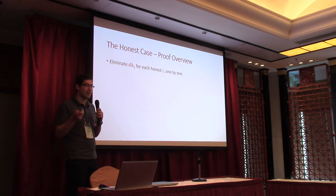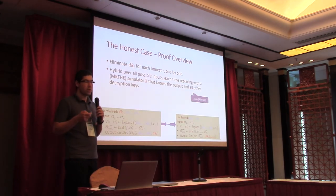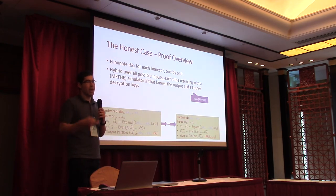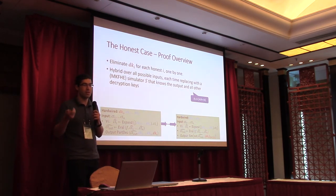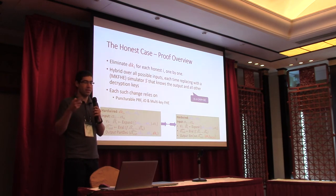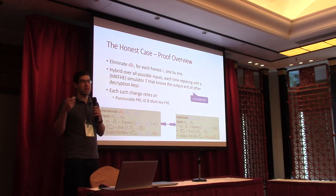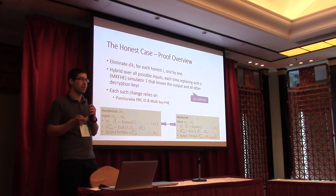How does the proof work? The high-level idea is to eliminate the decryption key from the obfuscation — that's the only secret thing in the obfuscation described. We do a very long sequence of hybrids in which we use the simulator of the multi-key FHE scheme, go input by input through the circuit, and eventually arrive at a circuit that doesn't have the decryption key of the i-th player, but only uses the simulator to sample a simulated value. Each step in this hybrid proof uses the security of the punctured PRF, iO, the multi-key FHE simulator, and some other tools. This is very similar to a proof by Anant et al. in the context of combiners of obfuscation.